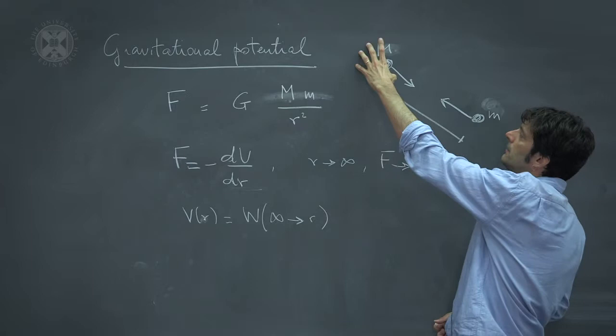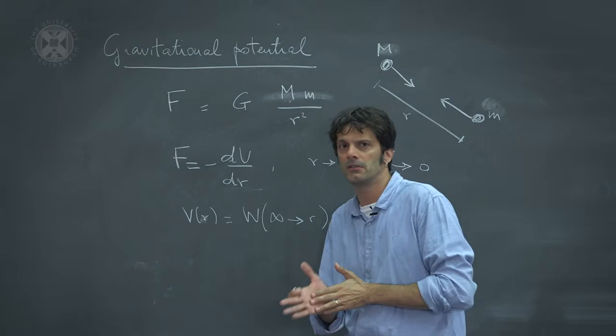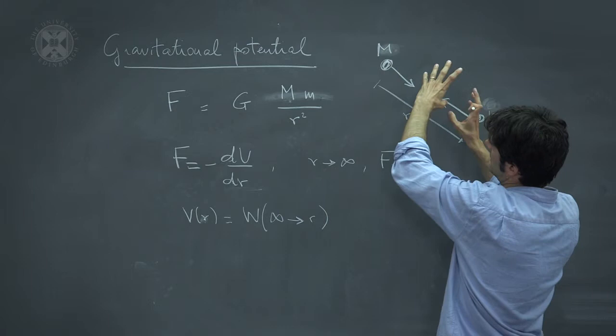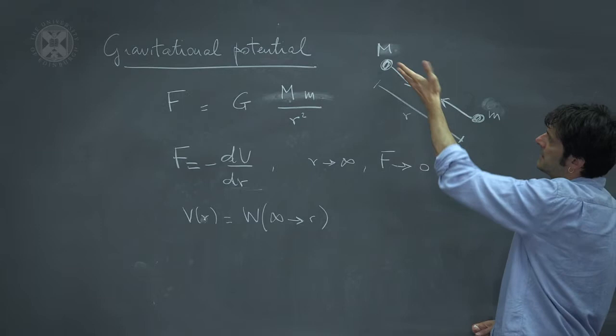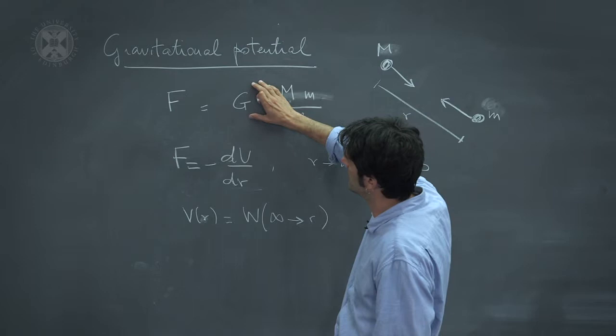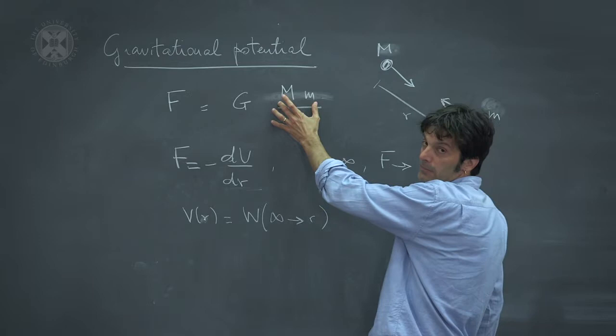the other one with mass little m, and then according to the universal law of gravitation, there is a force that attracts the two bodies towards each other. The force is directed along the line connecting the two bodies, and the magnitude of the force is given by Newton's constant times the product of the two masses,